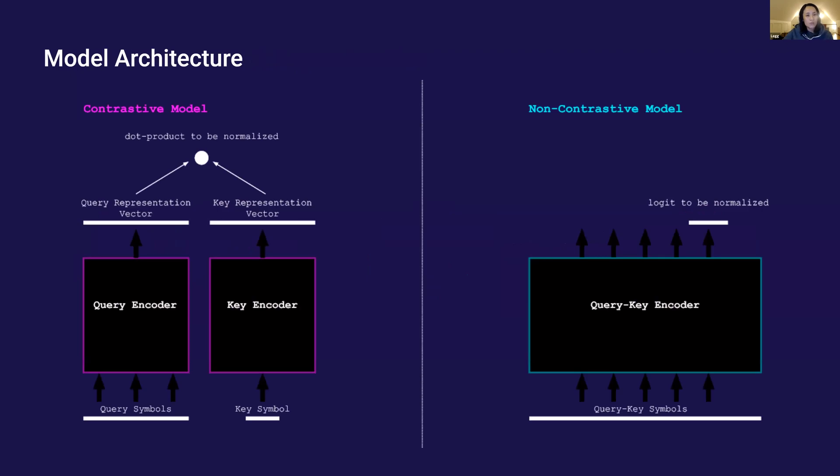To validate my intuitions, I set up two architectures. One is a contrastive model which encodes queries and keys separately and scores the compatibility using the dot product retrieval layer. The other is a non-contrastive model which scores each query key pair as a continuous sequence.